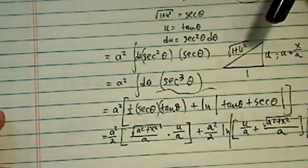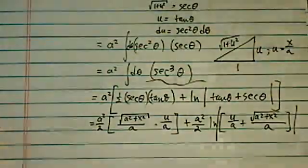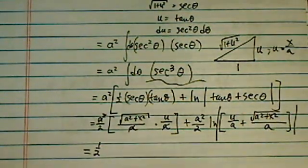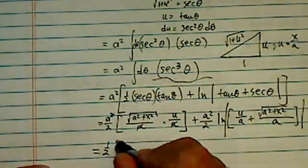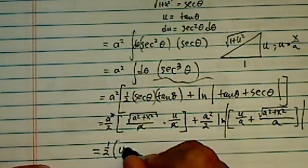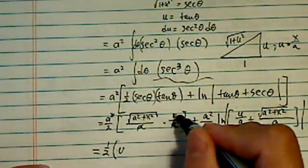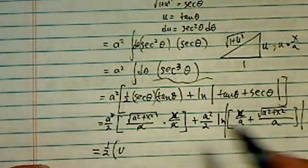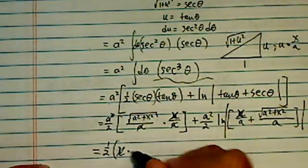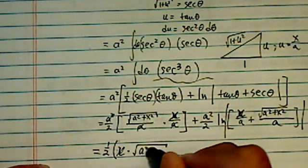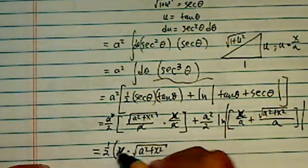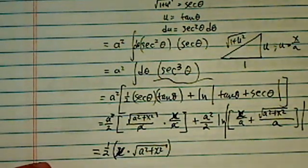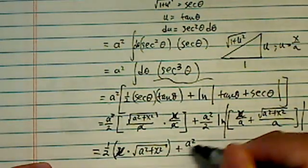And then let's do one more step, I promise, at the end of this. I have a squared over here, I'm just going to make it a half. And then I have u, this is x, this is x too. So I have x times radical root of a squared plus x squared, that's the first term, that's complete.